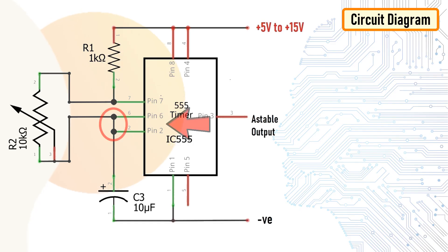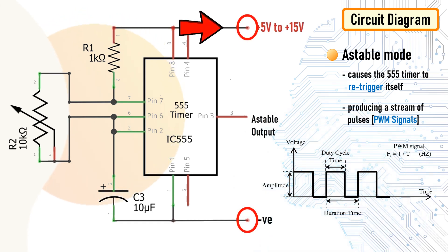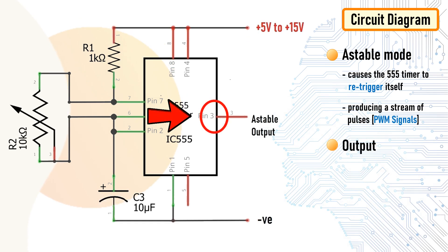The circuit is very simple. By connecting pin number 2 and 6, we put the 555 timer in astable mode. Astable mode causes the 555 timer to re-trigger itself producing a stream of pulses, the PWM signals, as long as it's hooked up to the power supply.